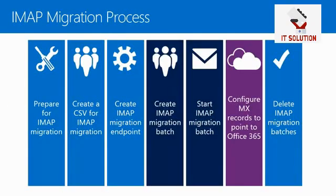The IMAP migration consists of seven easy steps. The first three steps are the getting-ready steps. Steps four and five are where you actually perform the migration, and these steps are repeatable in different batches. Step six is where you redirect the mail flow, and step seven is where you complete the IMAP migration. In the next few slides we will zoom in further on the different steps.